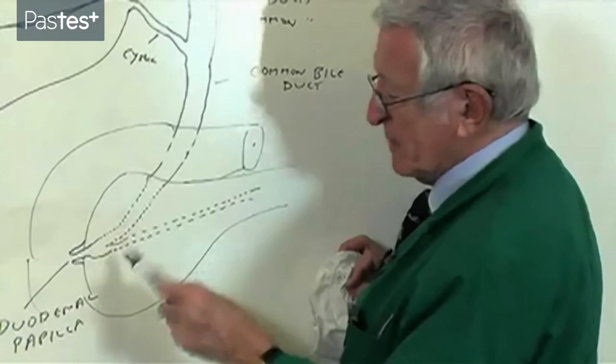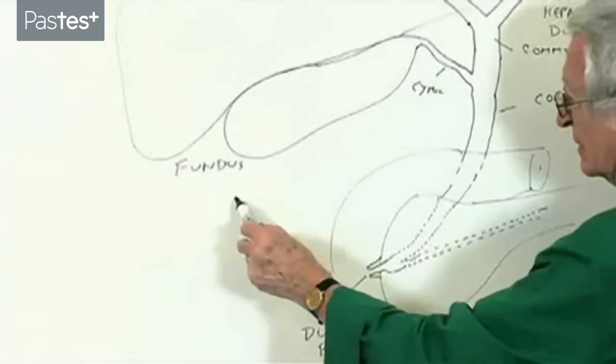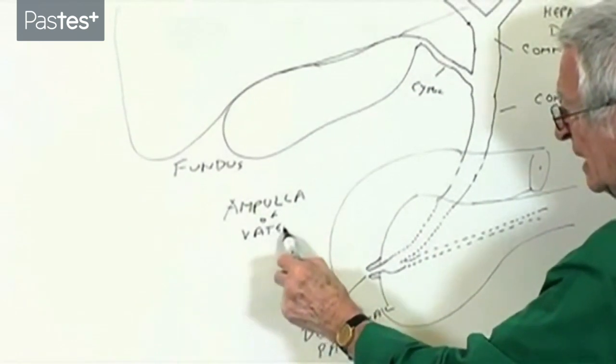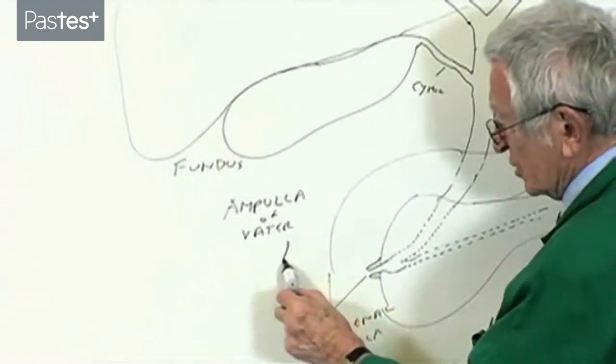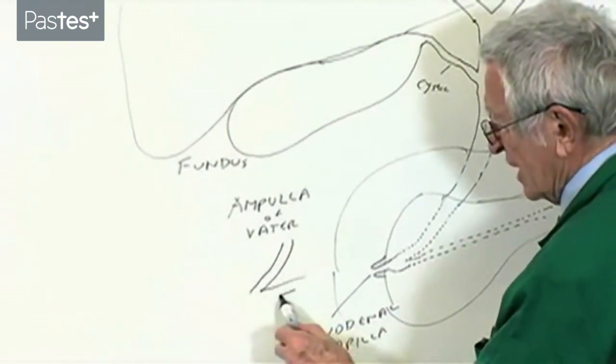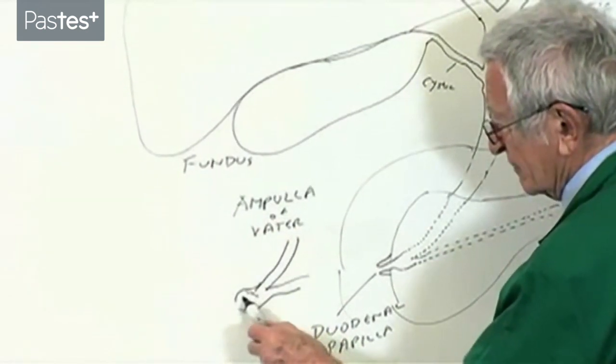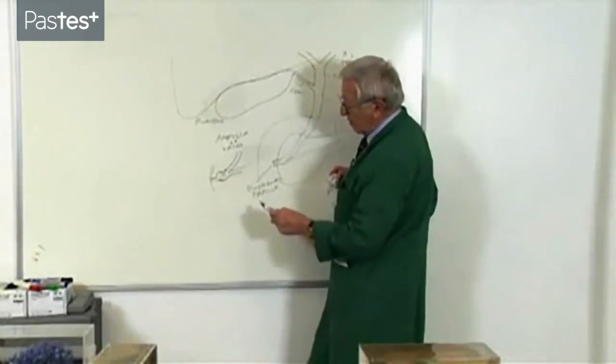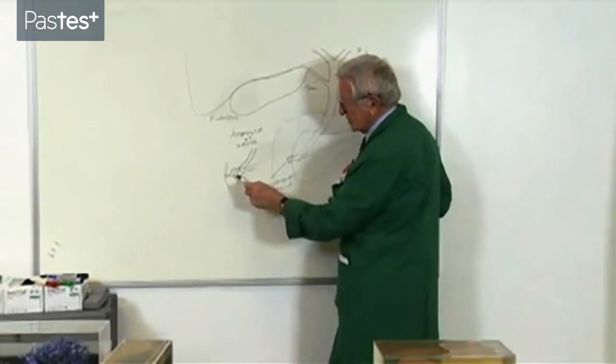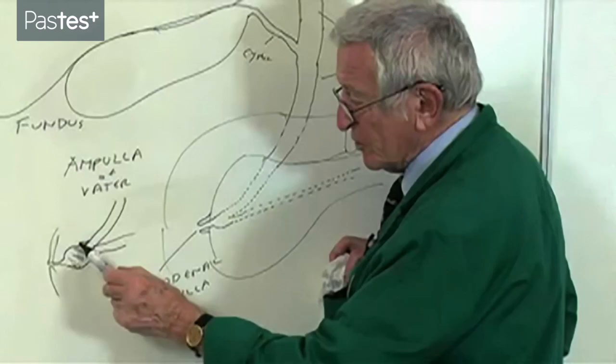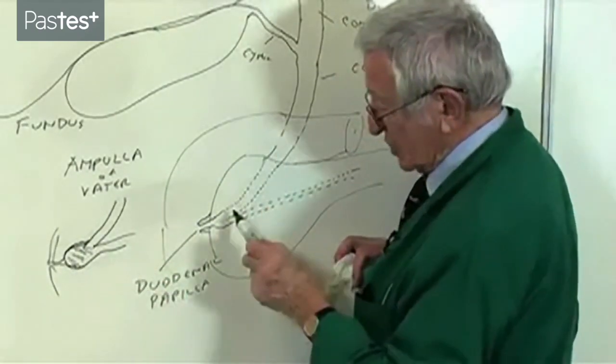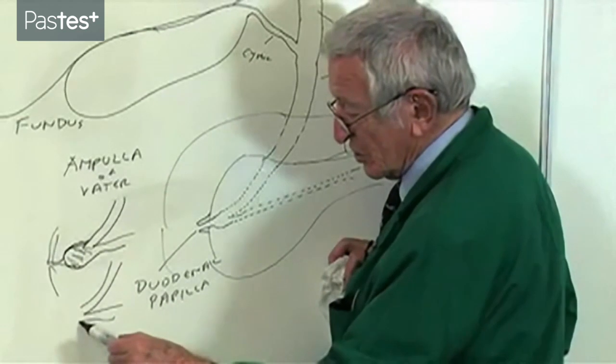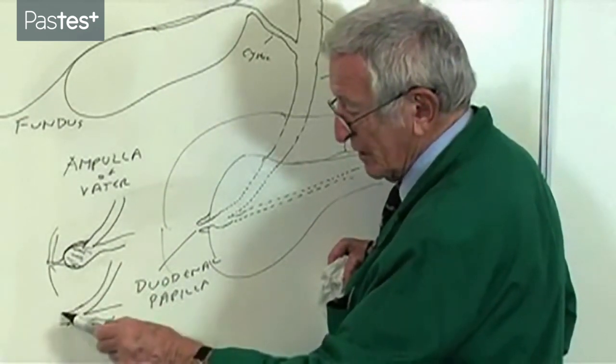Now, we talk about that common opening being the ampulla of Vater. Let's just write it up there. That's the term everybody uses. And the pictures in the book show this. They show the bile duct going down like so, they show the pancreatic duct, and then they show an ampulla like that, opening into the duodenum. Well, if that ampulla exists, it's very uncommon. You don't see that. If you look at a cholangiogram, you won't see an ampulla like that. What you will see is what I've drawn here. The ducts do join together, of course, and they don't form an ampulla. There's just a common junction like that with no ampulla into the duodenum.